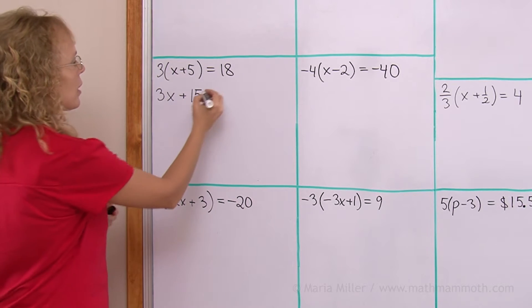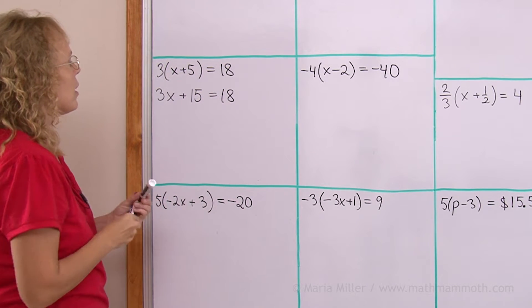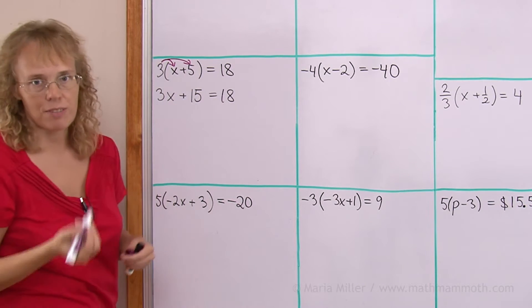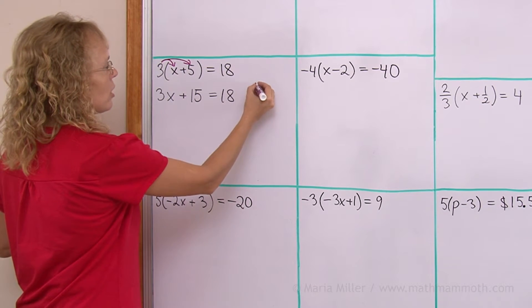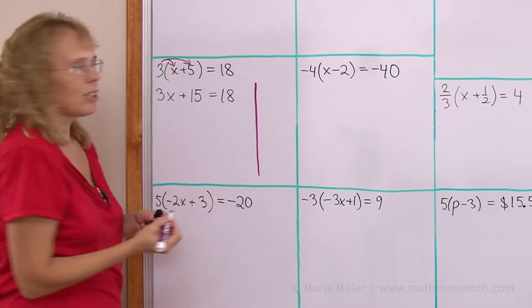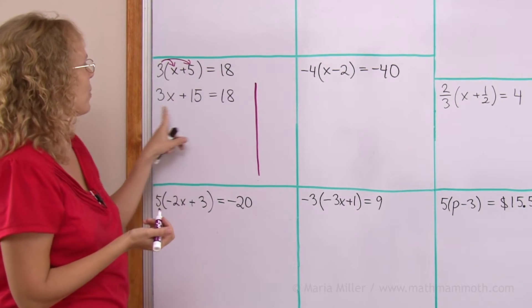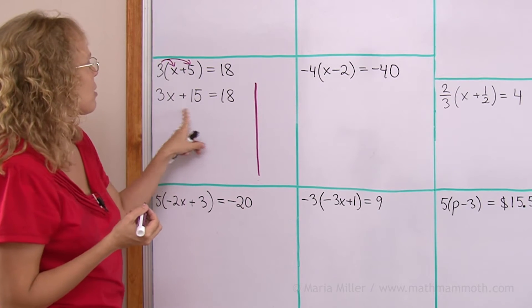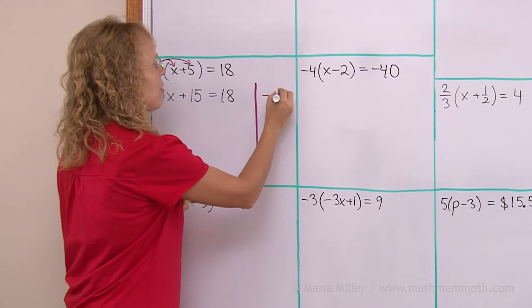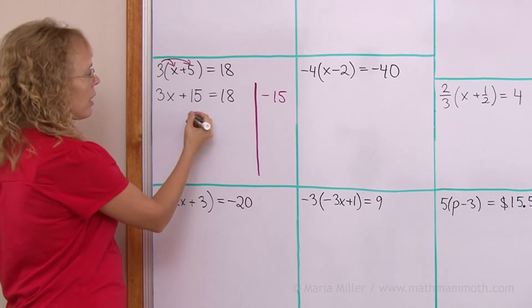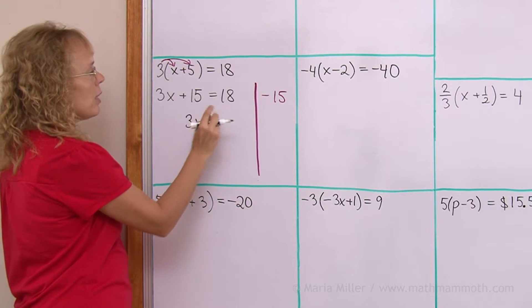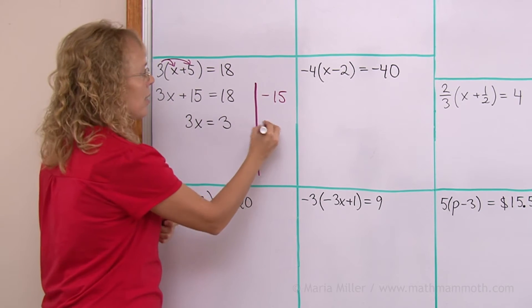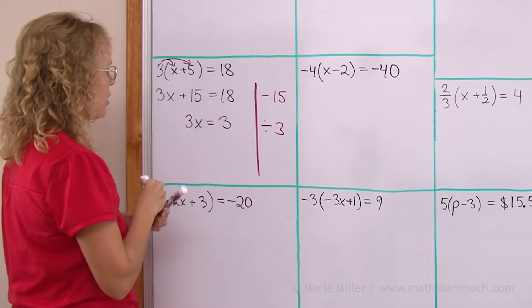Then over here, of course, 18. So what happened was I got 3 times x and 3 times 5 out of that. And now I'm going to put my margin here, marginal notes, as to what I'm going to do to both sides of this equation. I want to have the term with x alone here, I want to isolate it. So I'm going to get rid of the 15 by subtracting 15 from both sides. So that leaves 3x alone. Here 18 minus 15 equals 3. And then, of course, you just divide both sides by 3 to get x equals 1.